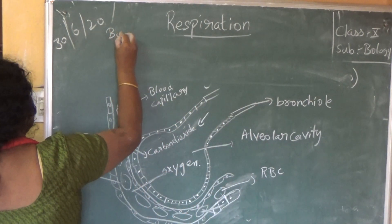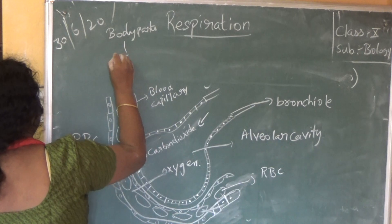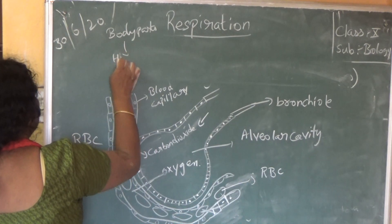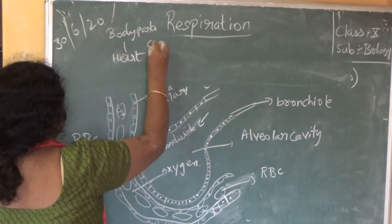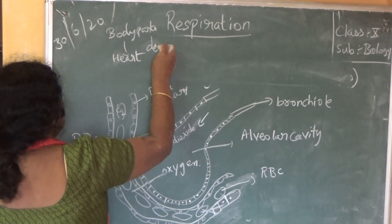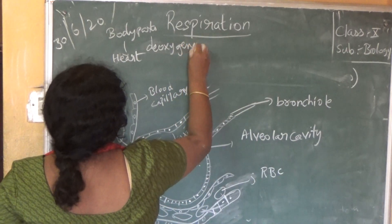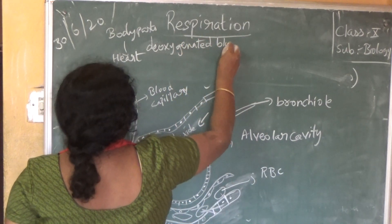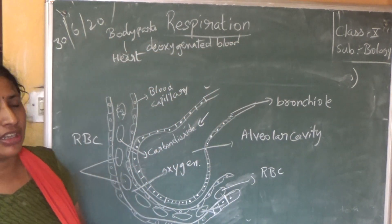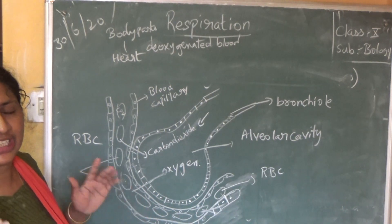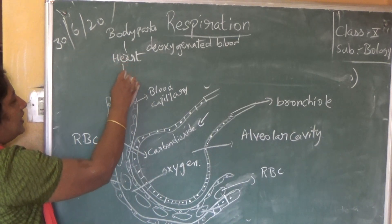From the body parts, blood reaches the heart. This is deoxygenated blood — meaning it is carbon dioxide-rich blood; oxygen is not there. From the legs, hands, stomach — all the deoxygenated blood, which contains carbon dioxide, reaches the heart. From the heart it reaches to the lungs.